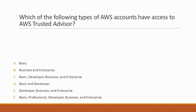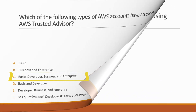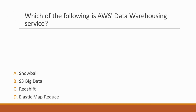Next question: Which of the following types of AWS accounts have access to AWS Trusted Advisor? Options: A. Basic, B. Business and Enterprise, C. Basic, Developer, Business, and Enterprise, D. Basic and Developer, E. Developer, Business, and Enterprise. Correct answer is option C, because all AWS accounts have access to AWS Trusted Advisor.